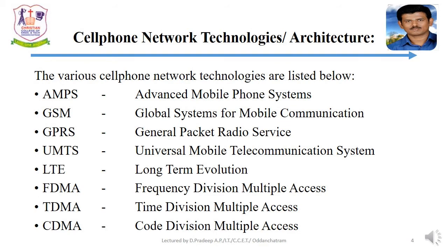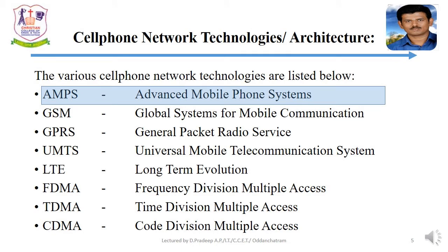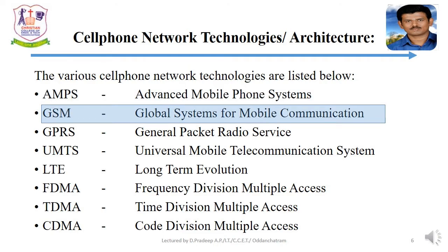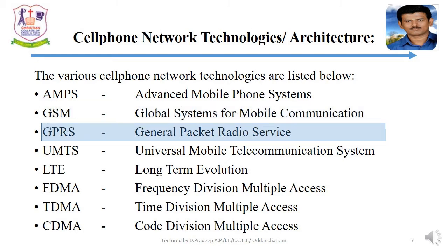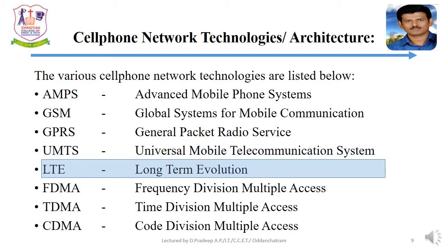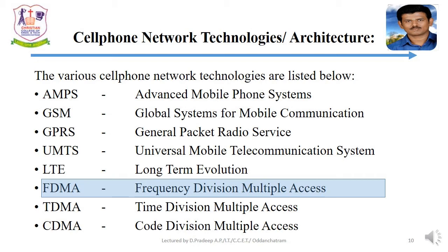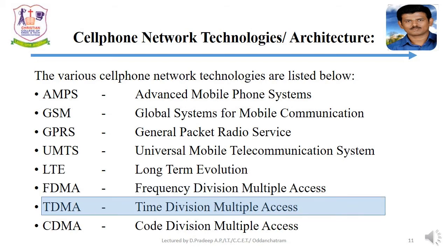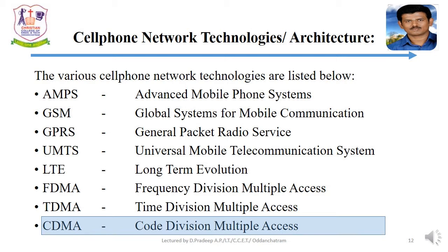The various cell phone network technologies are: AMPS (Advanced Mobile Phone Systems), GSM (Global Systems for Mobile Communication), GPRS (General Packet Radio Service), UMTS (Universal Mobile Telecommunication System), LTE (Long-Term Evolution), FDMA (Frequency Division Multiple Access), TDMA (Time Division Multiple Access), and CDMA (Code Division Multiple Access).